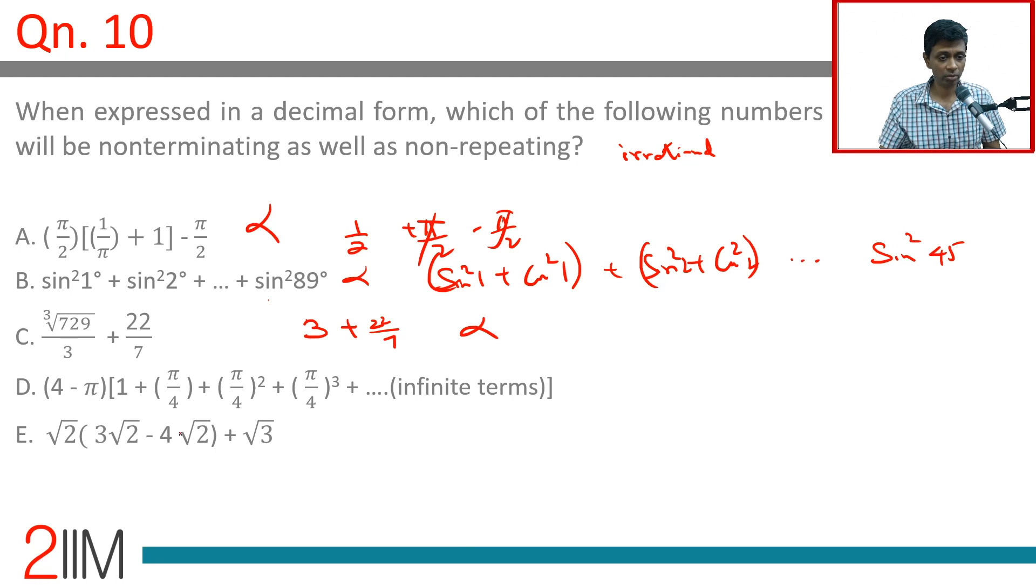Option D: (4 - π)[1 + π/4 + (π/4)² + ... infinite terms]. This is an infinite geometric progression equal to a/(1 - r). To find the sum: a is 1.